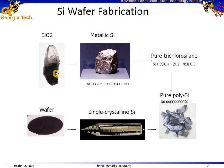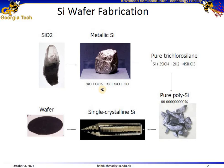In the first step, we convert the silicon dioxide into metallic silicon. The silicon dioxide found in sand or quartz is reduced to silicon by reacting silicon dioxide with silicon carbide at high temperatures to form impure metallic silicon, as you can see over here.